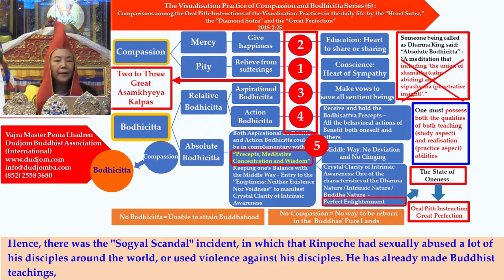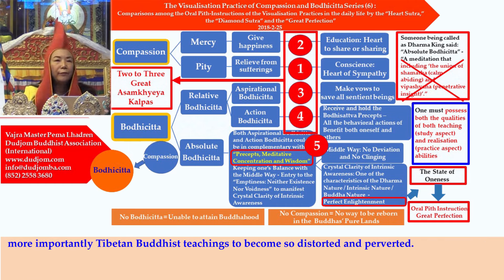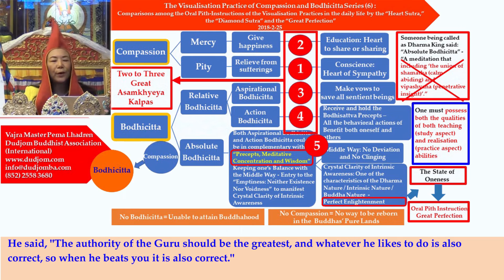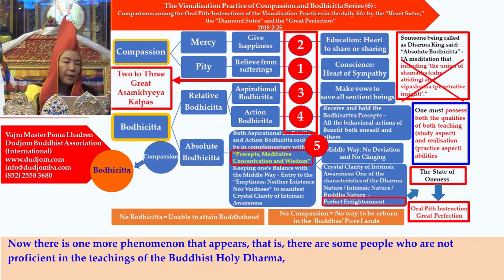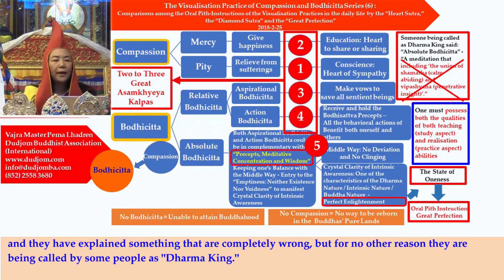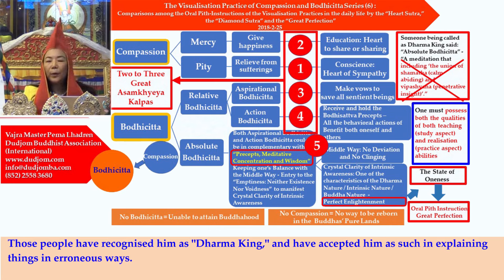Hence there was the Sogyal scandal incident, in which the Rinpoche had sexually abused many of his disciples around the world or used violence against them. He has already made Buddhist teachings — more importantly, Tibetan Buddhist teachings — become so distorted and perverted. He said the authority of the guru should be the greatest, and whatever he likes to do is correct, so when he beats you it is also correct. These actions have become a great distortion of the Buddhist holy dharma and have harmed Tibetan Buddhism.